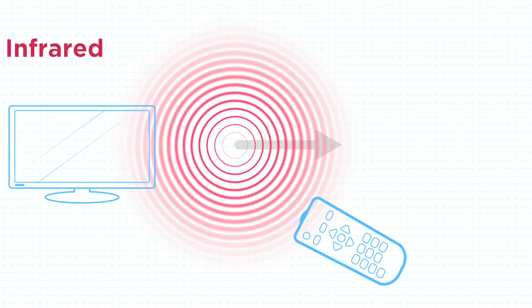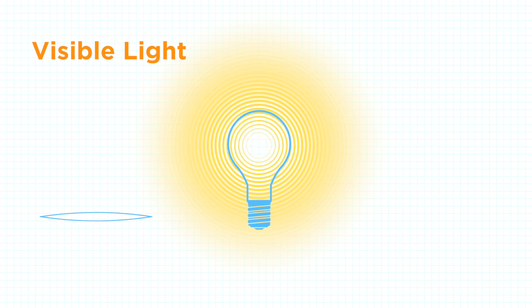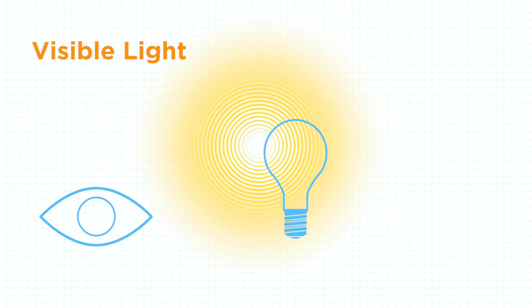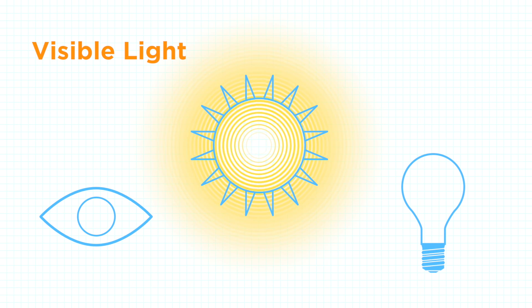And waves that move faster than infrared are known as visible light. Why? Ja, it's true. The light we see with our eyes is made of electromagnetic energy. So we see electromagnetic energy all the time. Very cool. Ja, electromagnetic energy at any frequency is an astonishing thing.